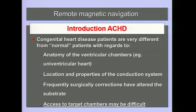Congenital heart disease patients — adults or pediatric cases — are very difficult and very challenging. They don't present with normal anatomy; they present with something that has been surgically changed or was already very different from birth. There are locations and properties of the conduction system that might be very different from normal people. There is frequently a block in the normal access to the target chamber. Let's say a typical re-entry around an AV valve — you'd just go in with venous access and do that re-entry, one of the easiest flutter ablations — but in congenital heart disease this might actually be a very major challenge because you just can't get into that target chamber so easily. So access is a major issue.